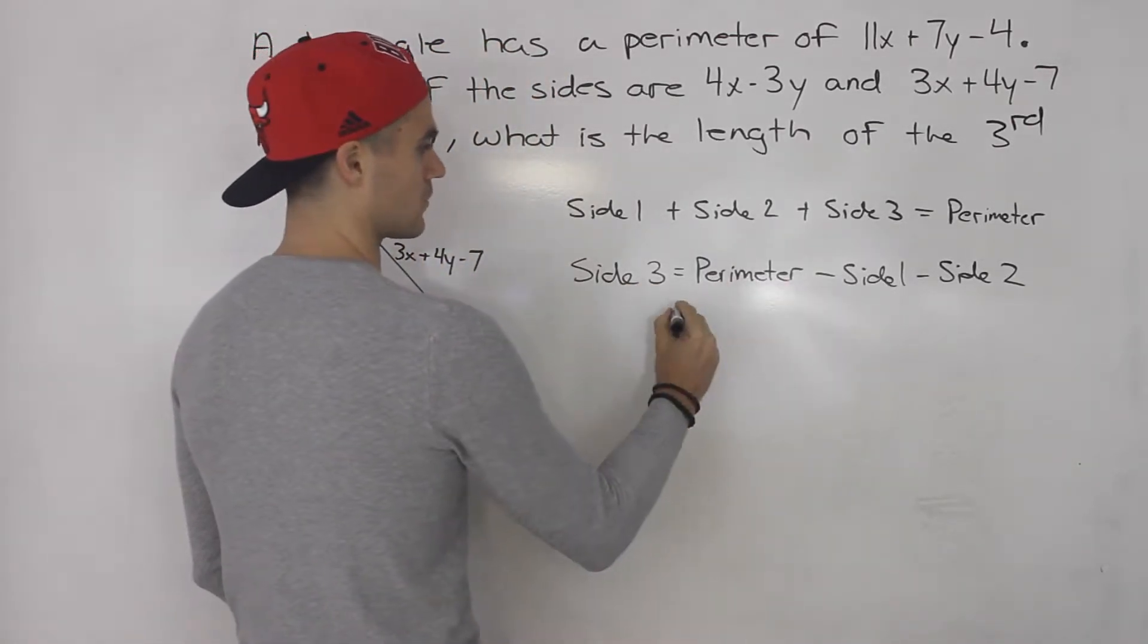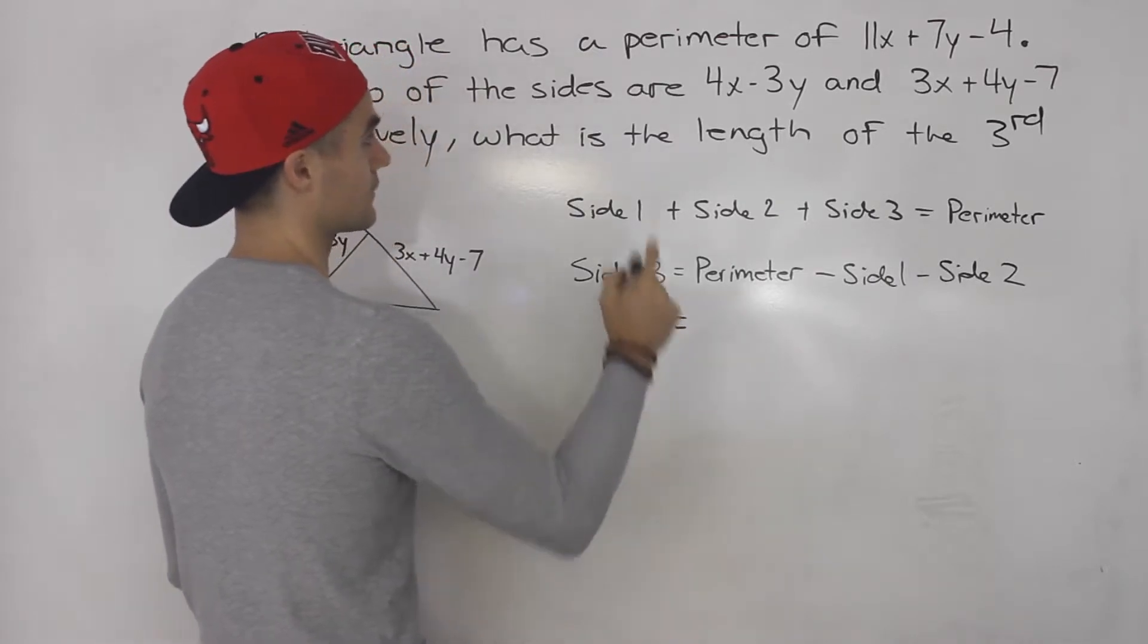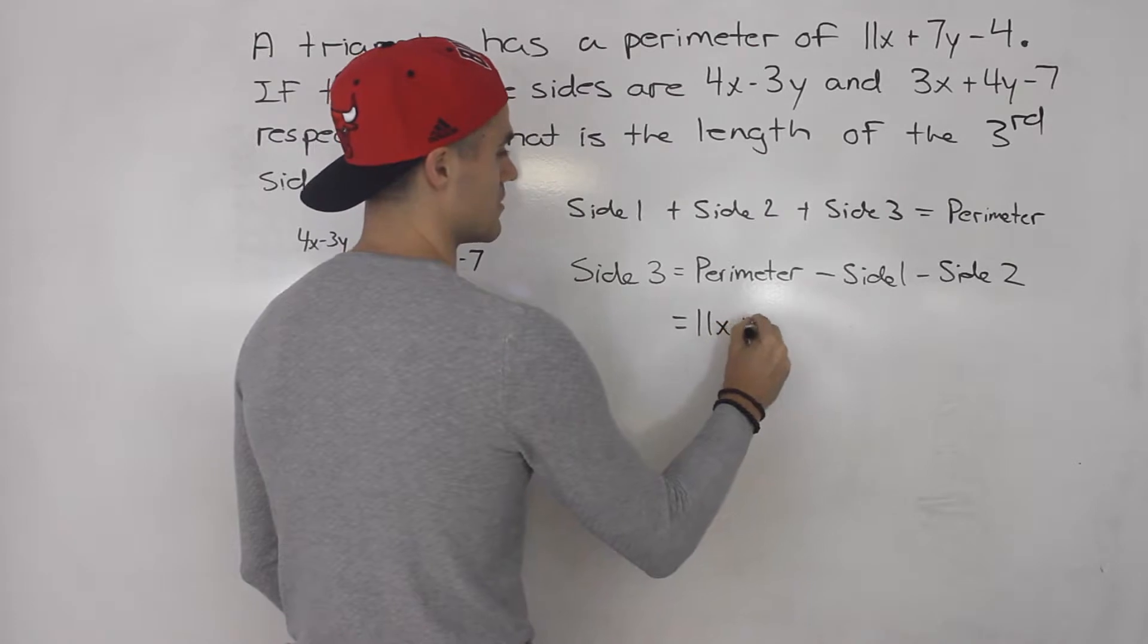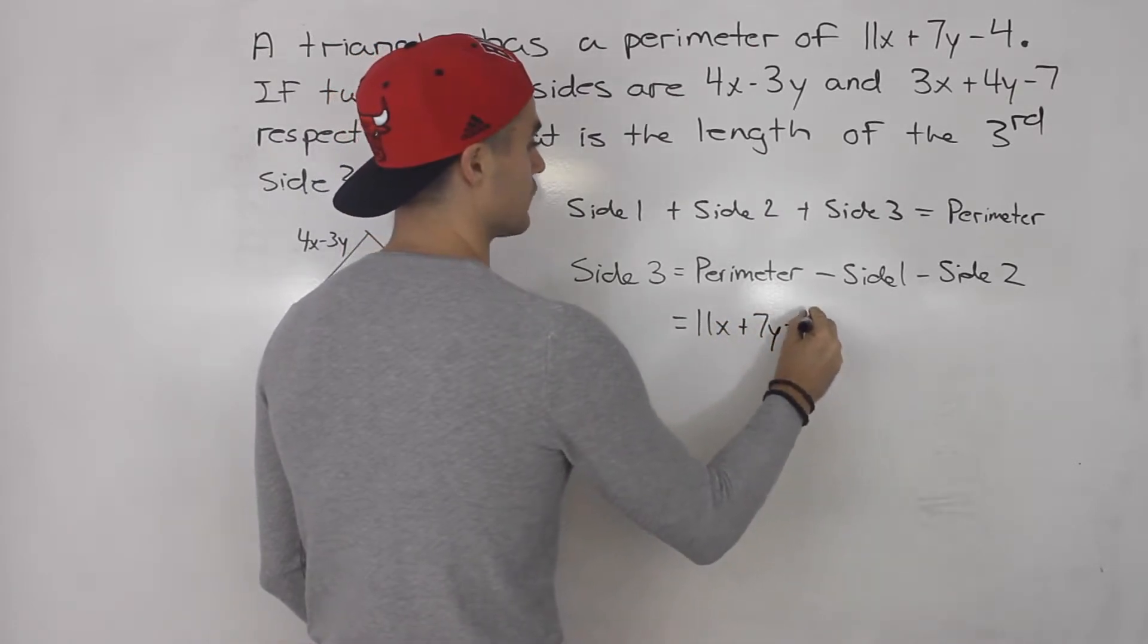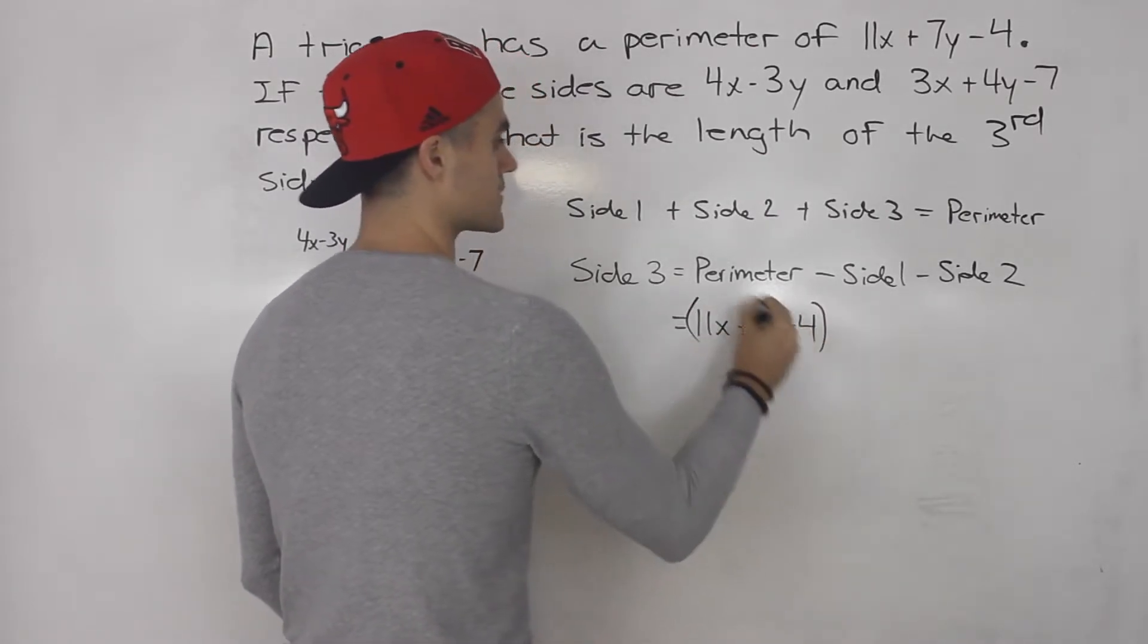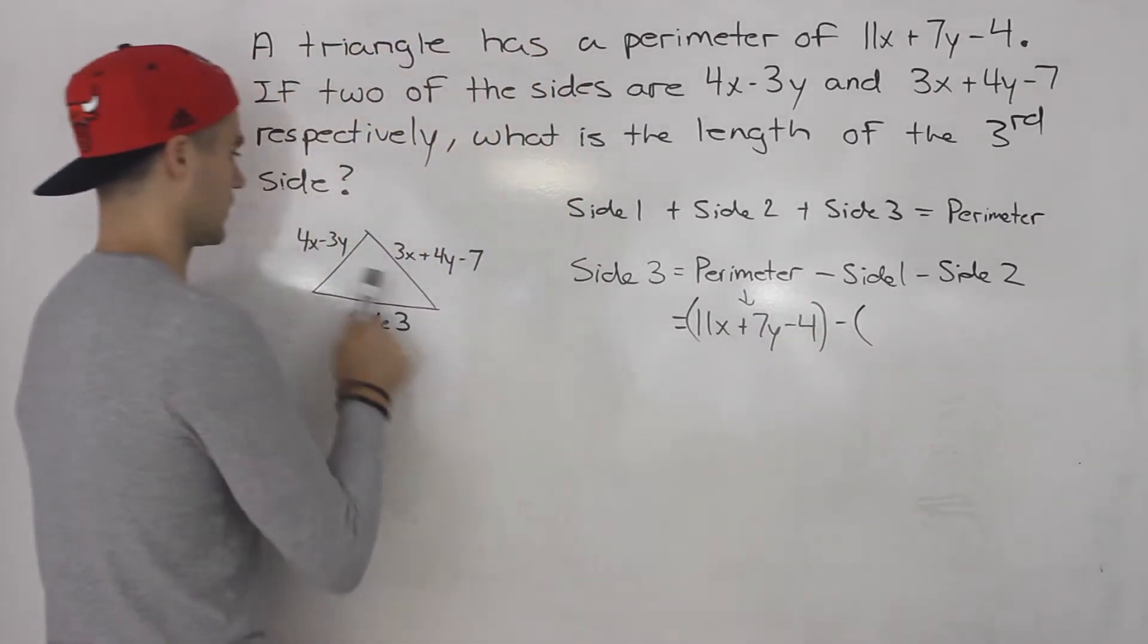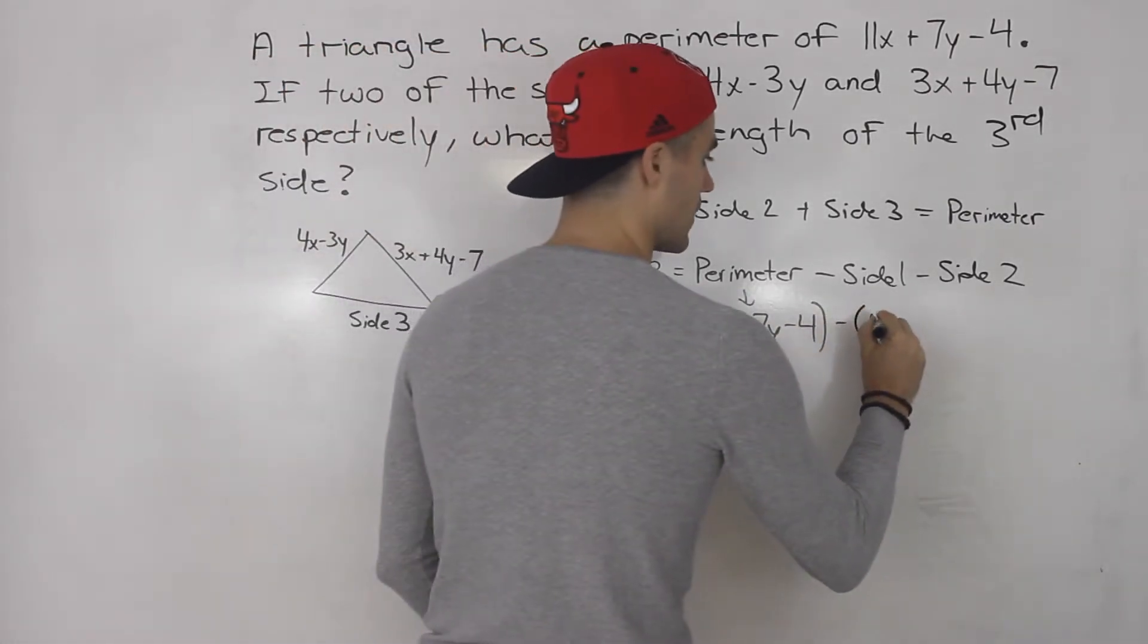Well now with this formula here we can just plug in everything that we have. So the perimeter of the triangle we're told is 11x plus 7y minus 4. So that there is the perimeter minus side 1. Let's call it 4x minus 3y.